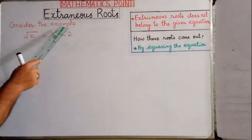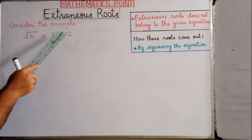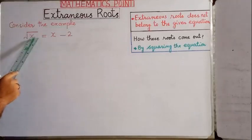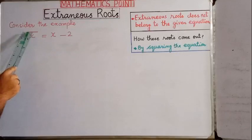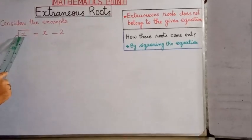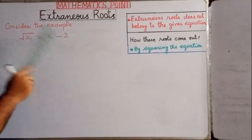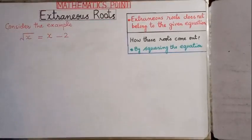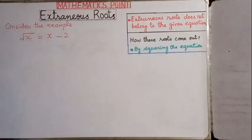We have an example — consider this equation. You can see x is under the radical sign, that is equal to x minus 2. So how do these roots come out?